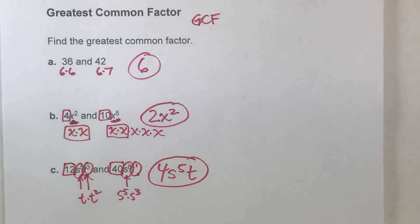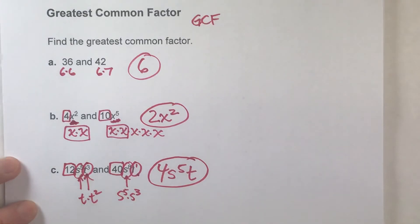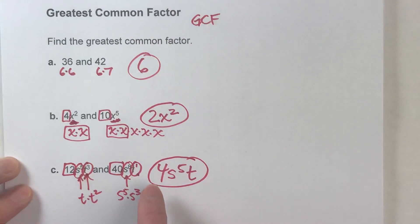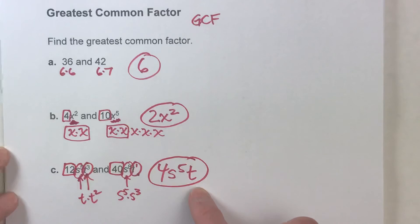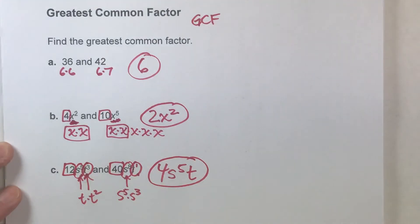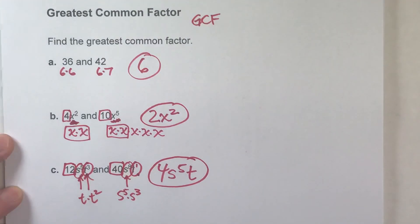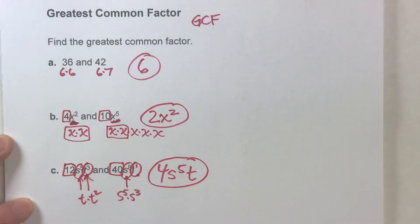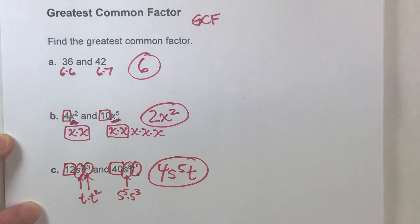So go really slow with these. Go step by step — find the greatest common factor of each piece, and then just put them together at the end. Hopefully you found this video helpful; if you did, please hit that like button and subscribe because it really helps us out. Good luck on your math, and I will see you next time.